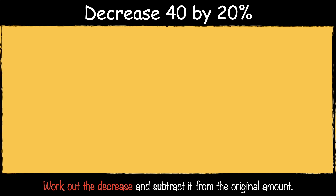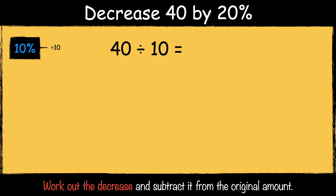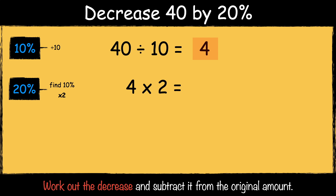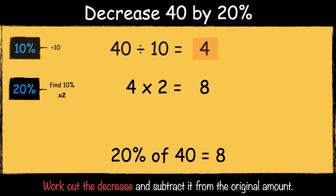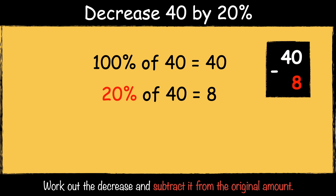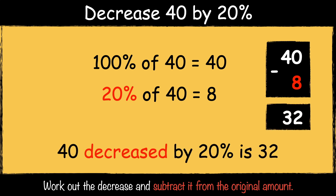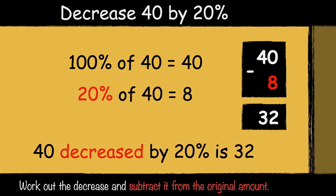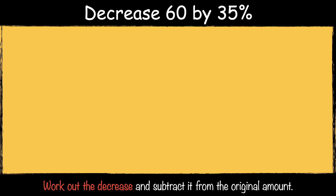Here's the first example: decrease 40 by 20%. First let's find 10% of 40 by dividing it by 10. 40 divided by 10 is 4. Then we multiply the answer by 2 to find 20%. 4 times 2 is 8. So 20% of 40 is 8. The next step is to subtract it from the original amount. 40 subtract 8 is 32. So 40 decreased by 20% is 32.